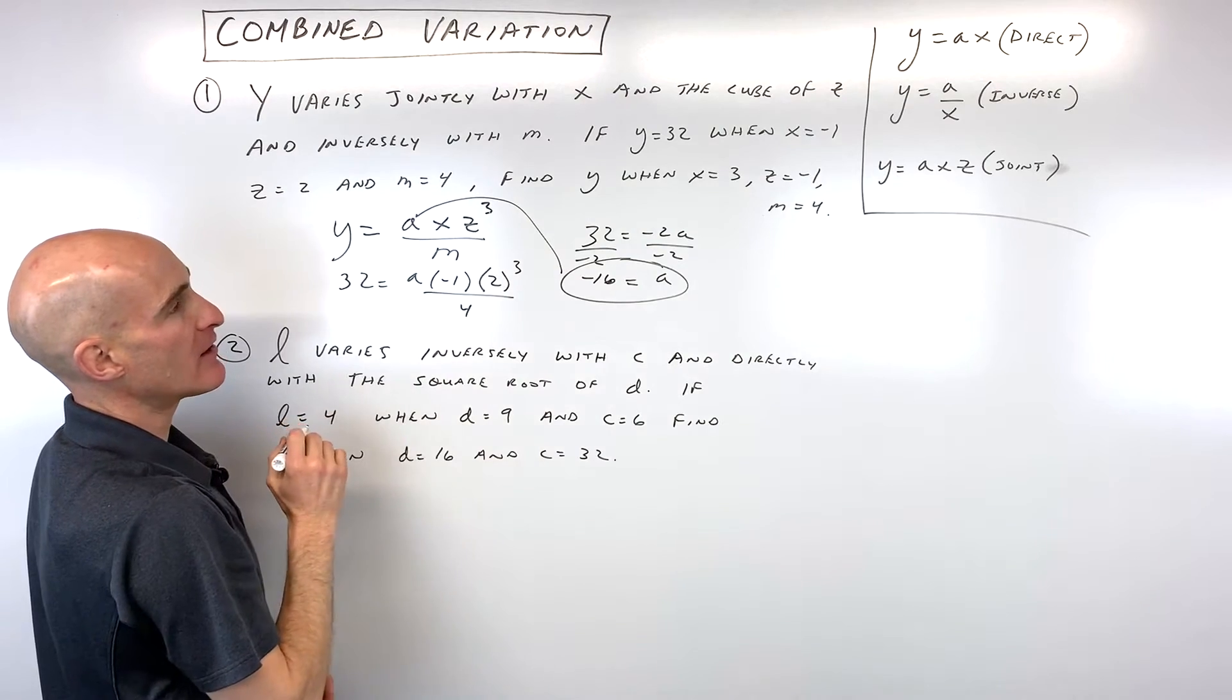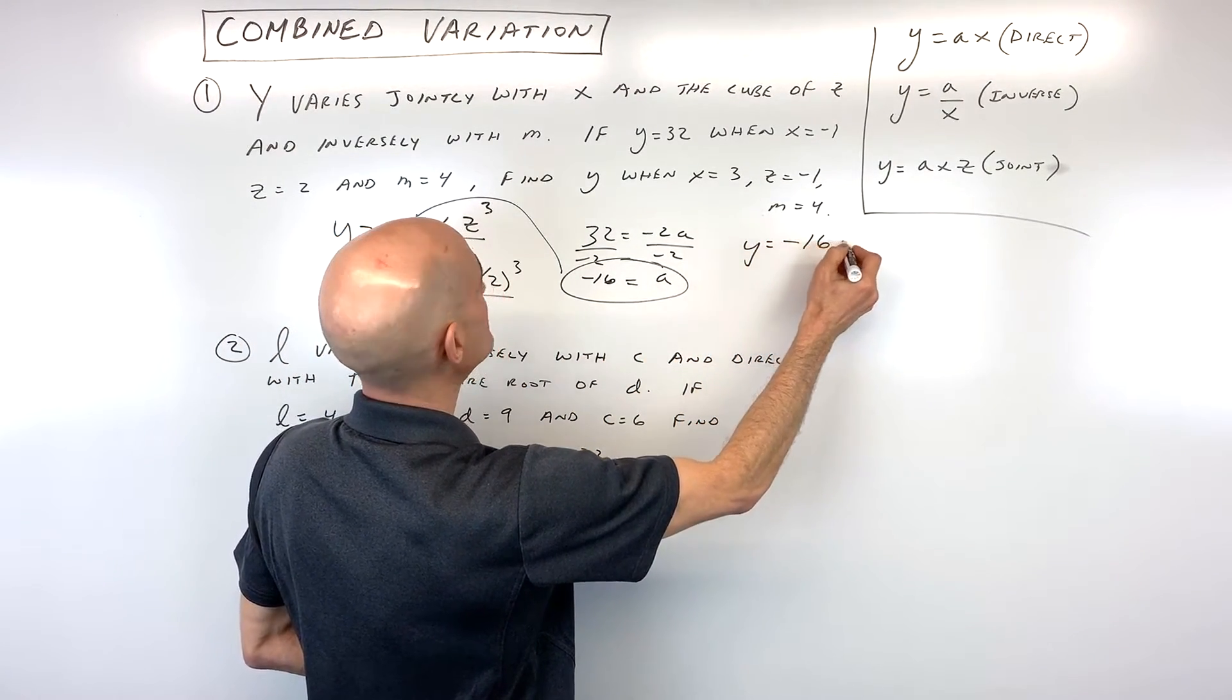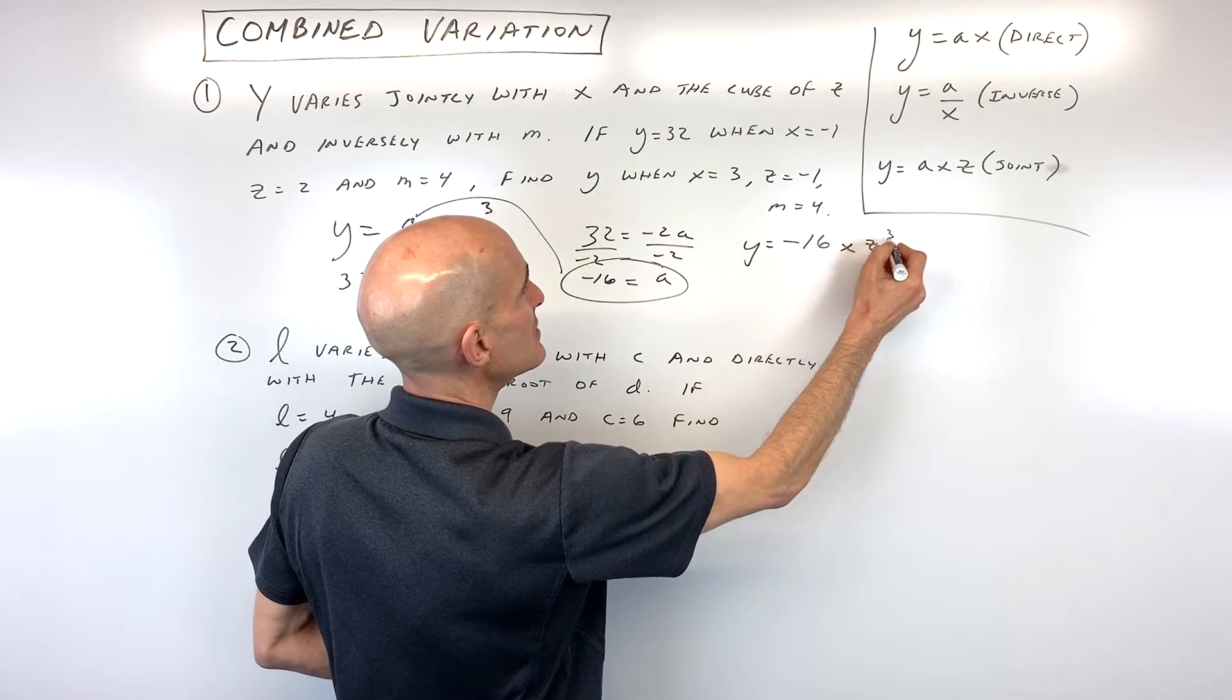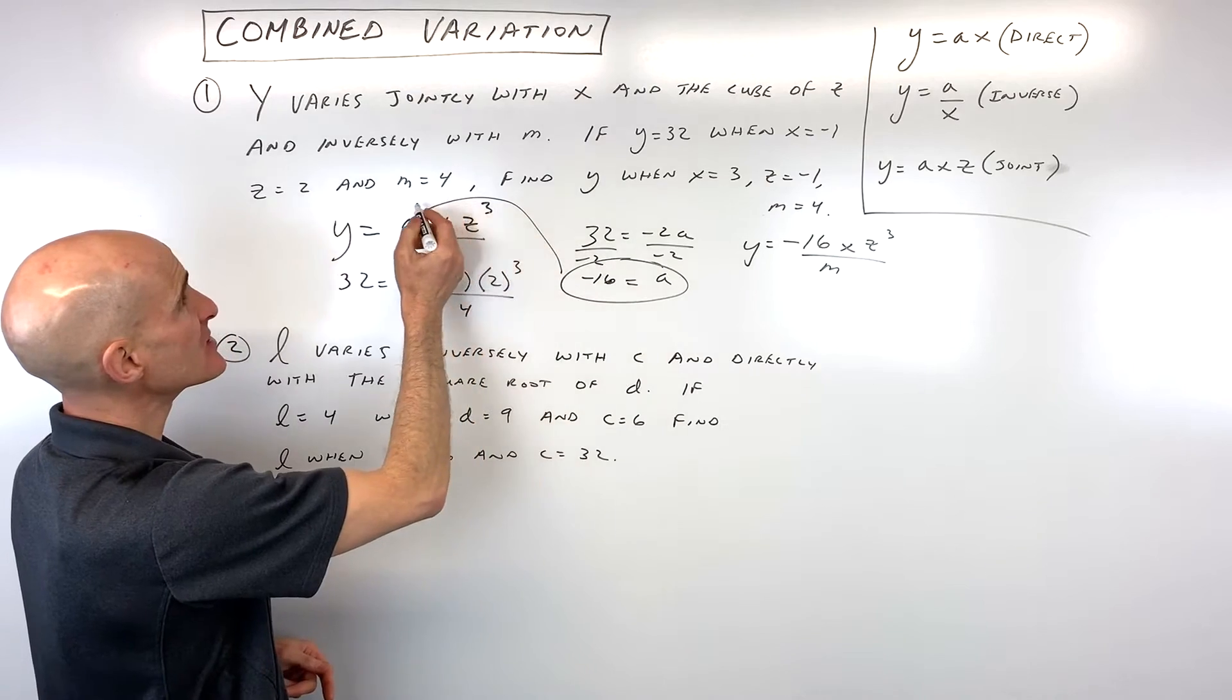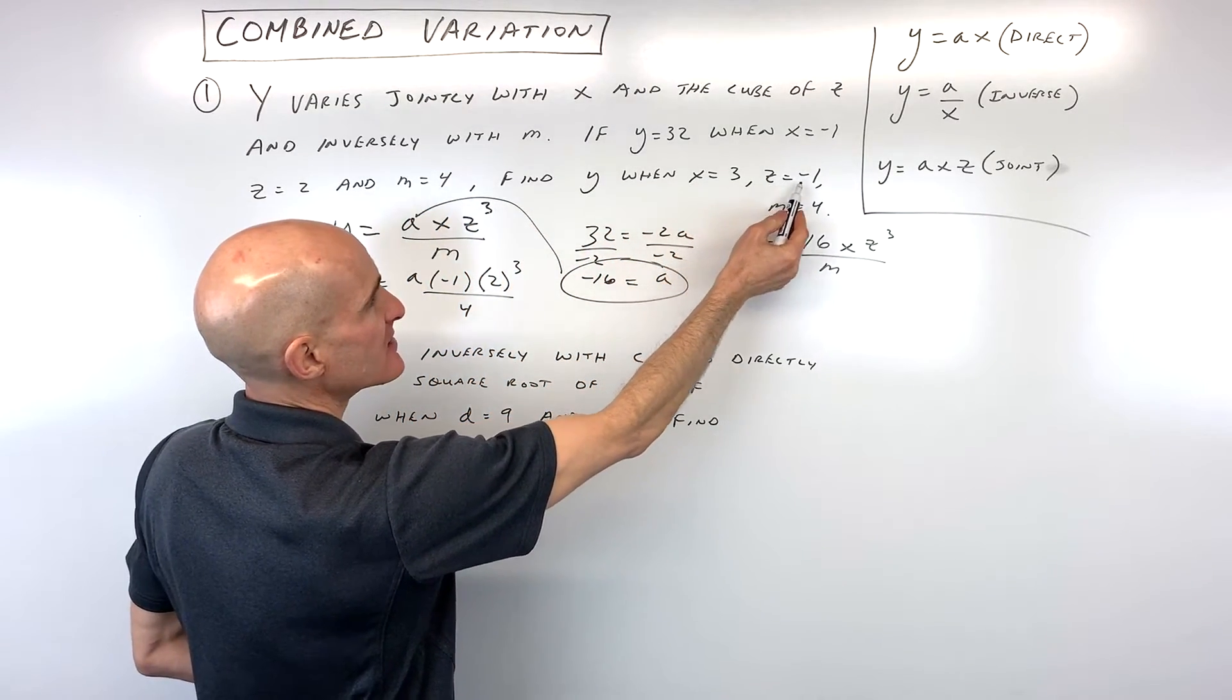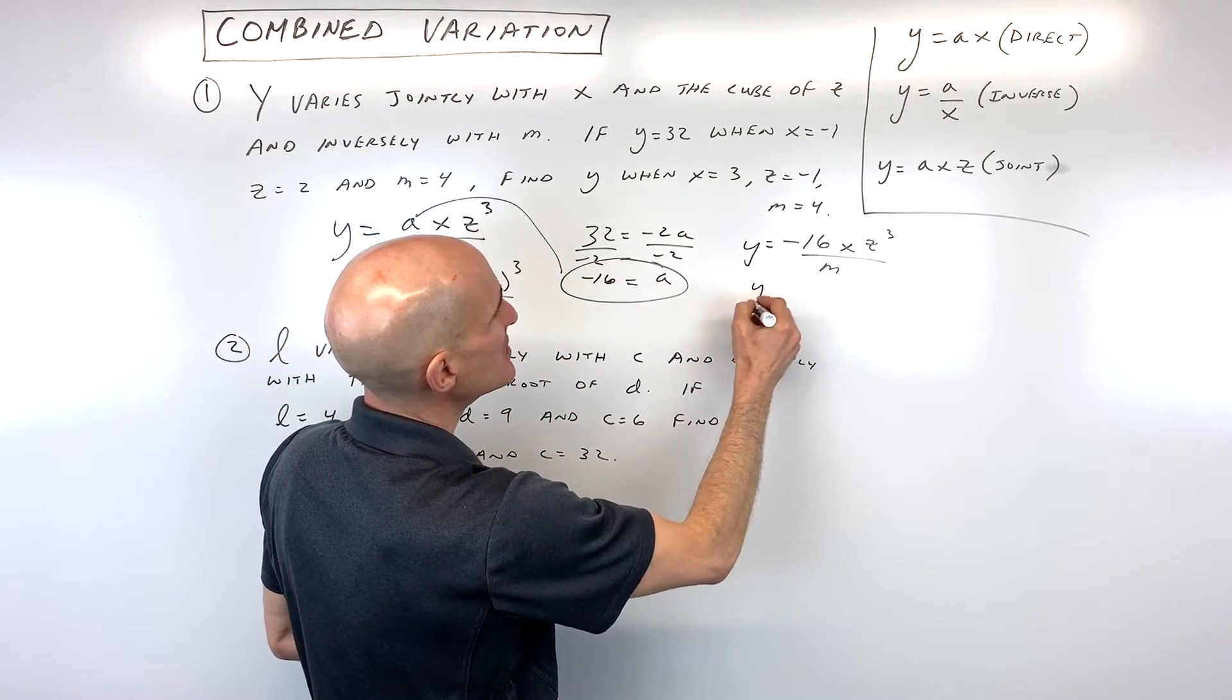We can put that back in for a there, and now we've got a more specific equation. So y equals negative 16 times x times z cubed, all divided by m. So now it says, find out what y is when x is three, z is negative one, and m is four.